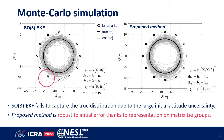During 50 rounds of Monte Carlo simulations, the conventional SO3-EKF shows inconsistent estimates with a 5-degree initial attitude standard deviation. However, the proposed method is robust to initial error, thanks to the representation on matrix Lie groups.